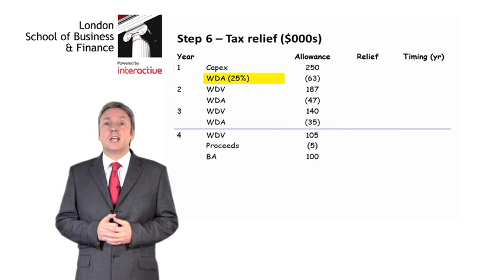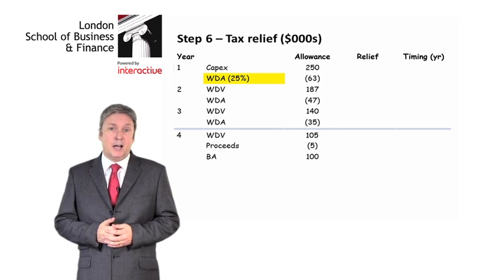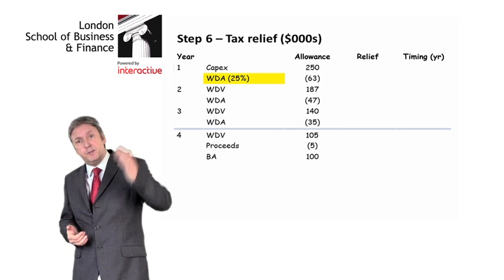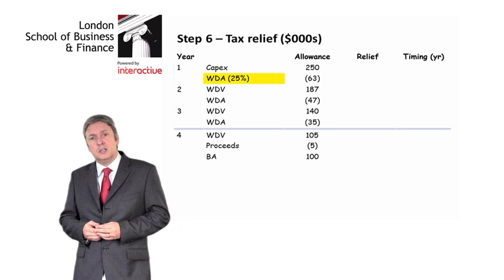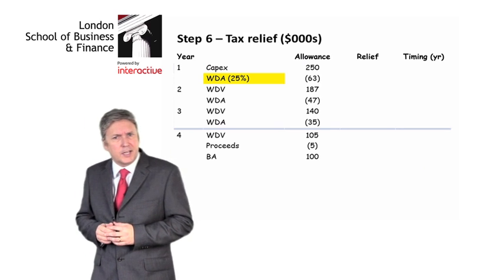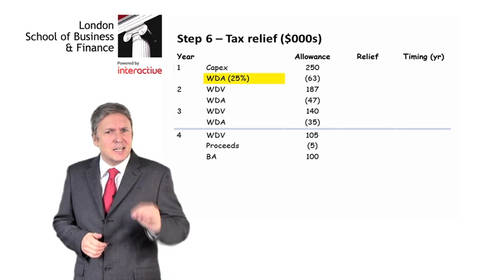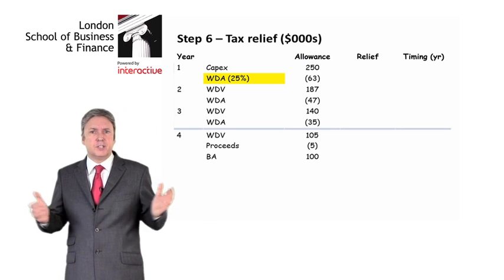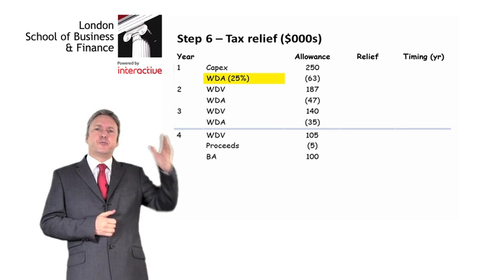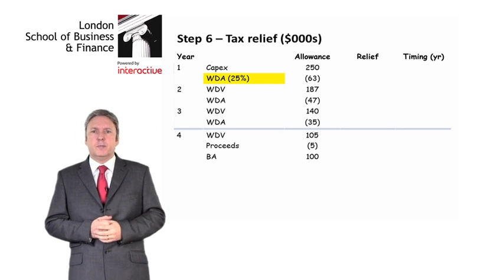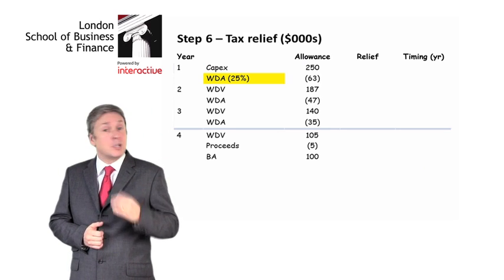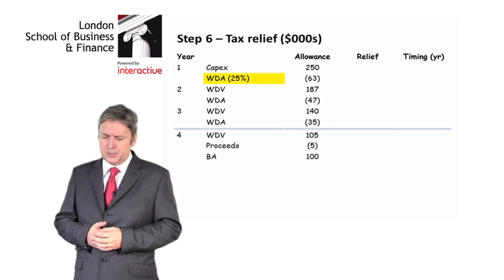That gives us a balancing allowance. It's a balancing allowance because we are further writing down the asset. In every single F9 paper I've ever seen — and I've seen the lot — and all of the previous papers of this type, I have only ever seen a balancing allowance. I've never seen a balancing charge.